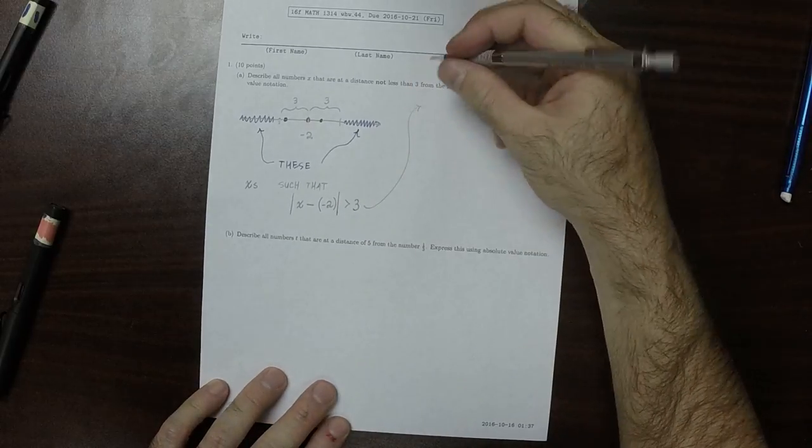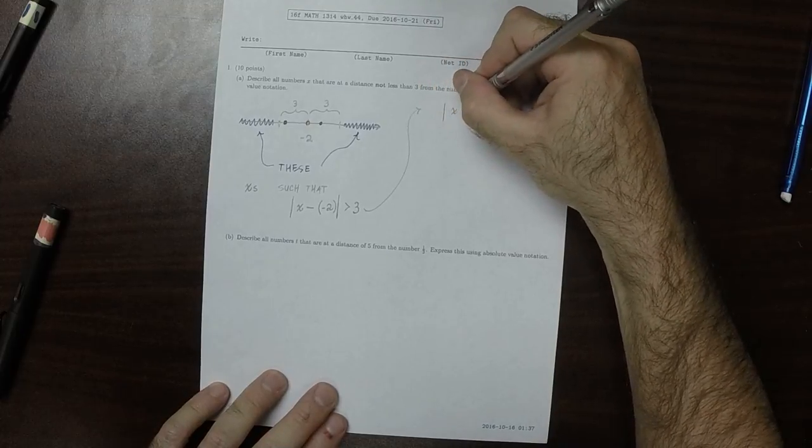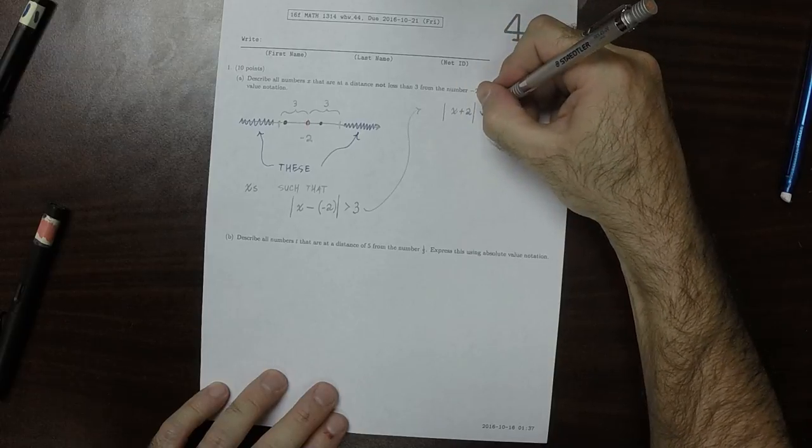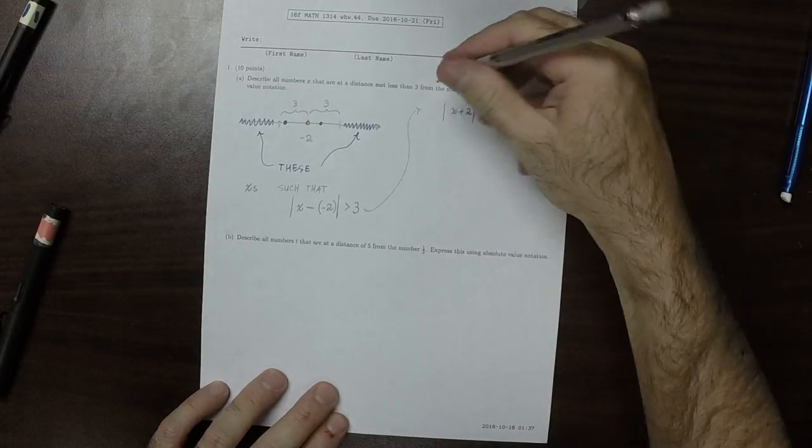And written slightly more simple, that would be |x + 2| > 3. So that's the answer to the question.